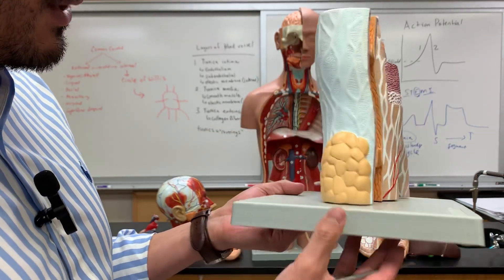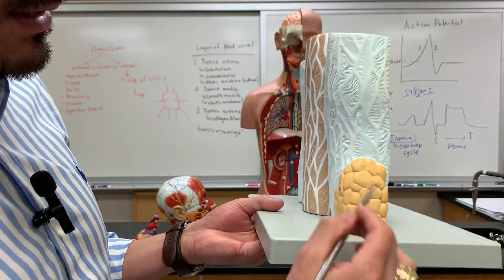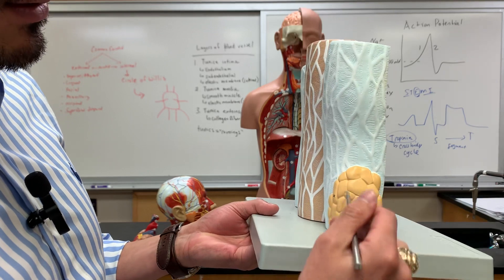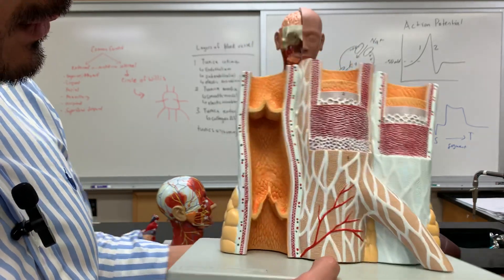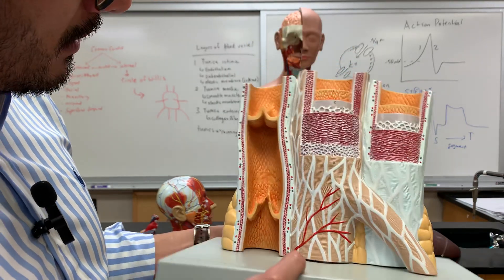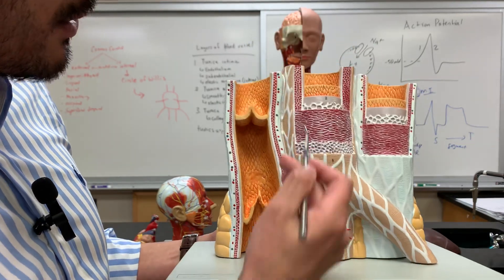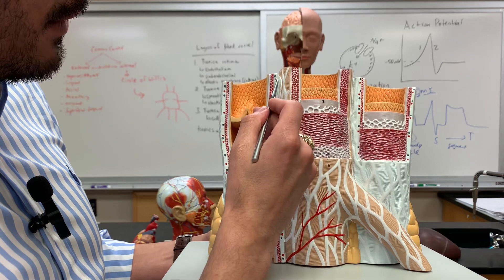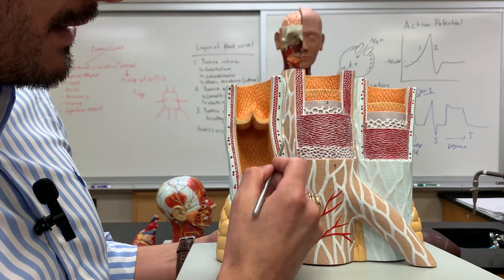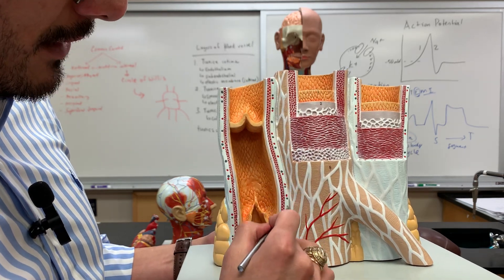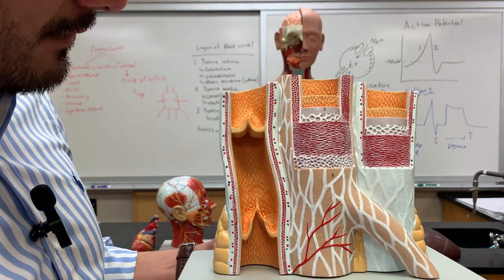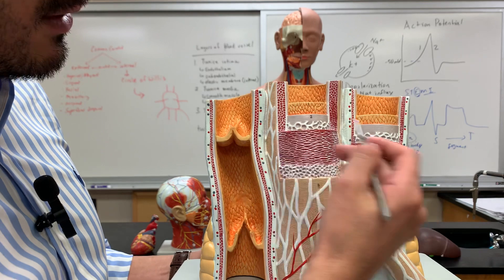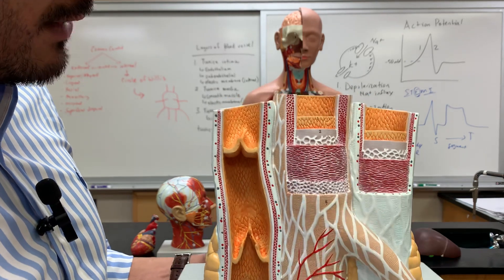The last thing to note is the adipose tissue here. You also have the different capillaries, the arterioles, and then the venules found within both of these.